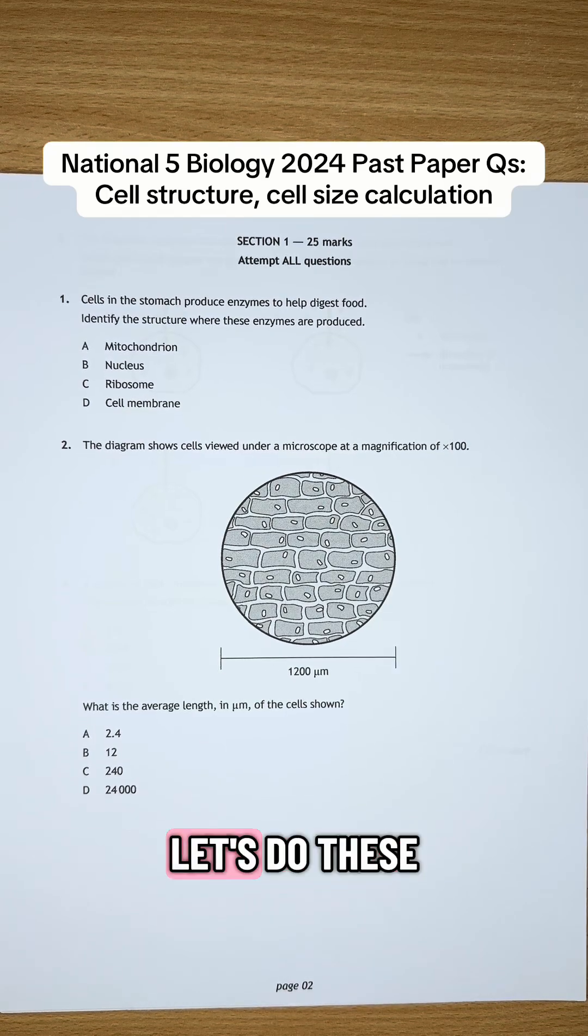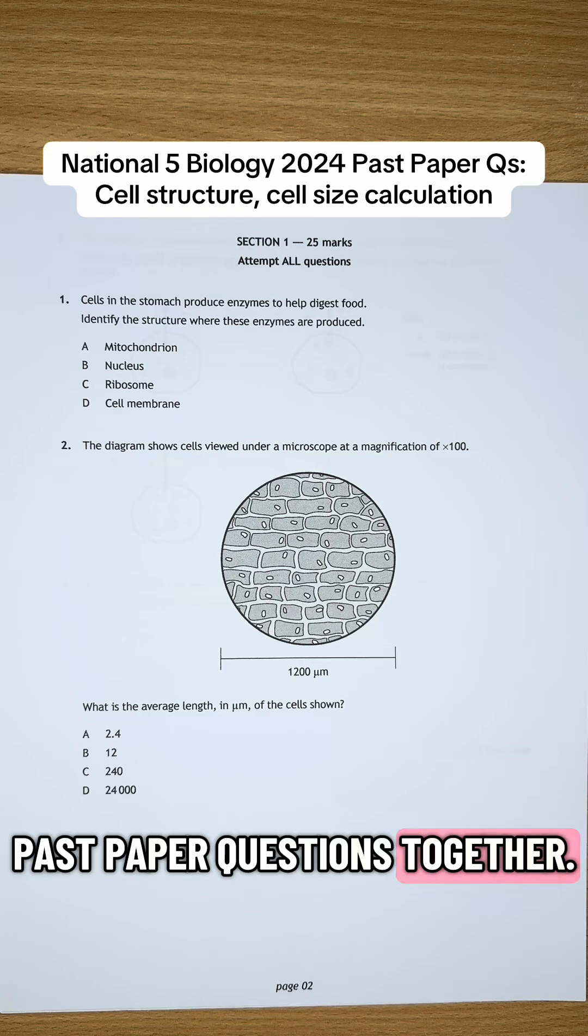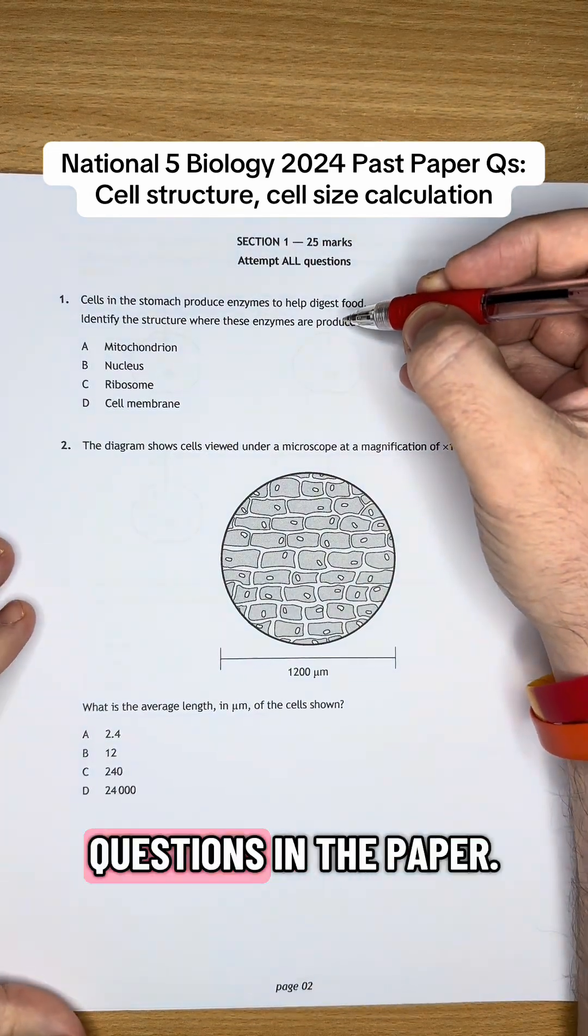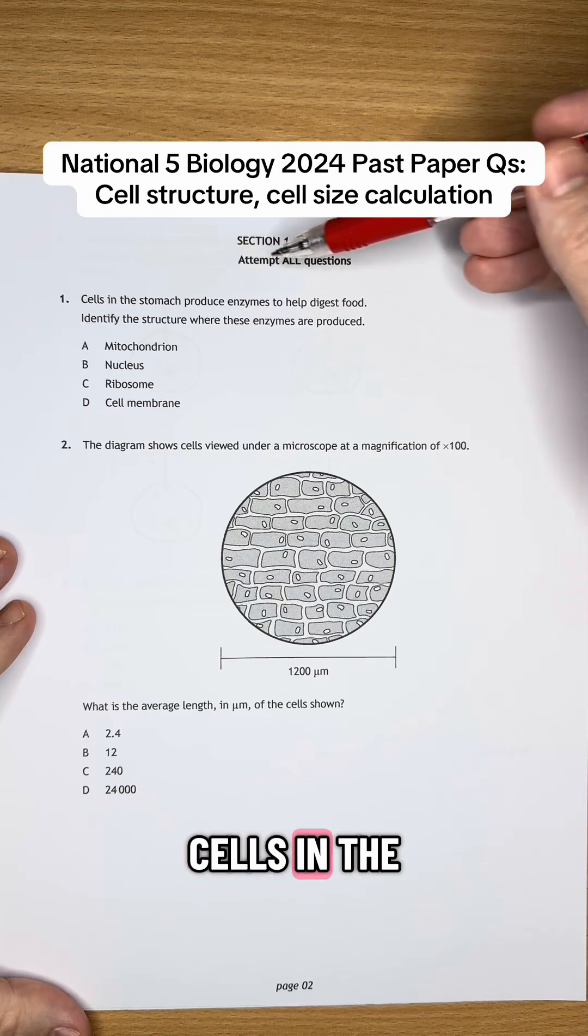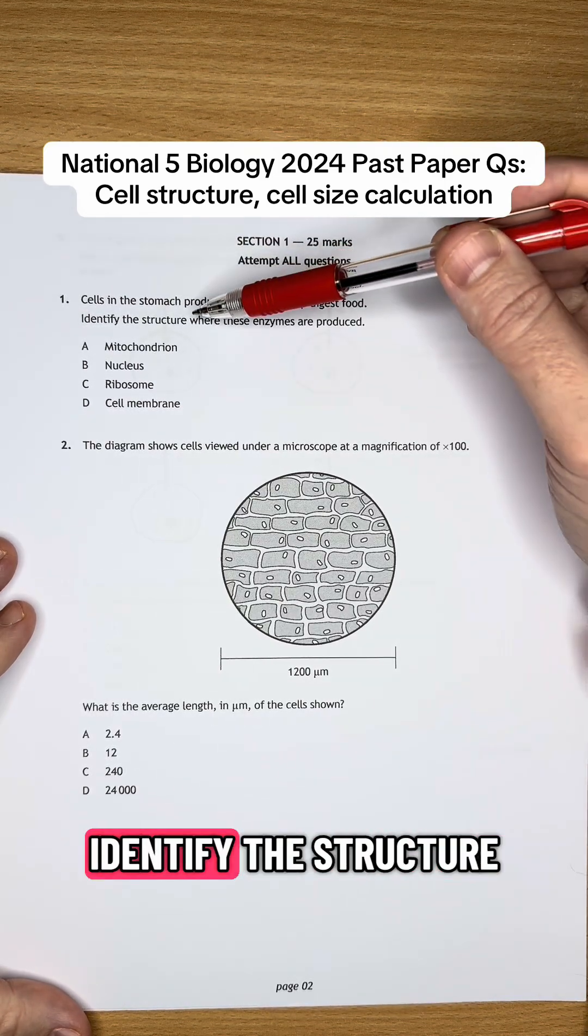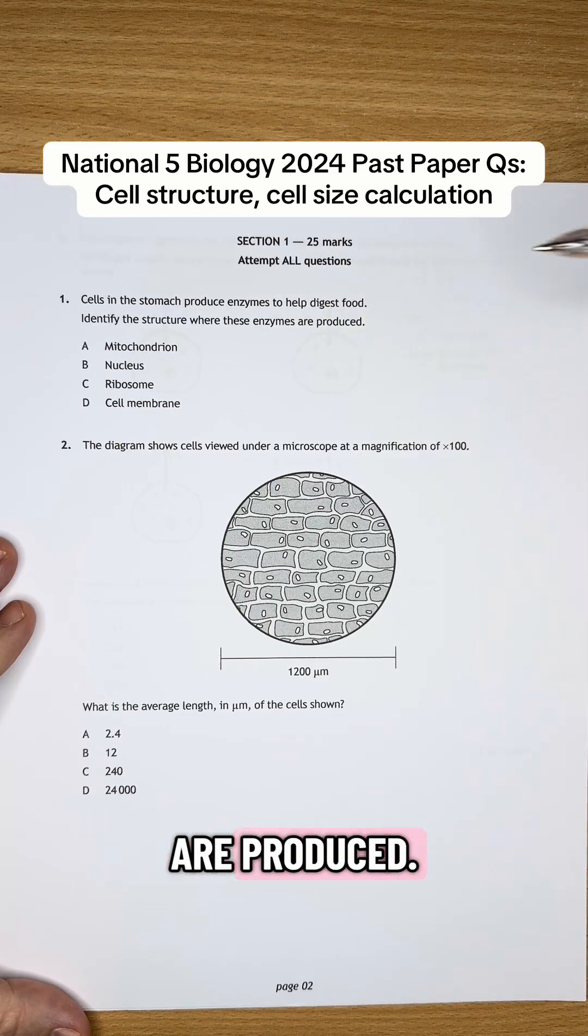National 5 Biology Students, let's do these past paper questions together. This is the first two questions in the paper. It says: The cells in the stomach produce enzymes to help digest food. Identify the structure where these enzymes are produced.